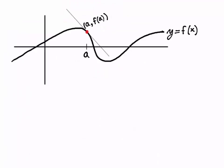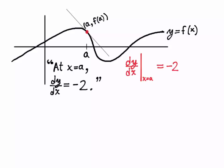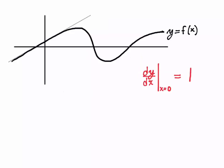Going back to the curve we were just looking at: we have differentiated it at x equals a and computed the slope of a tangent line — that slope looks to be about negative 2. We might describe that by saying, at x equals a, dy over dx is equal to negative 2. Or using evaluation notation: dy over dx evaluated at x equals a is negative 2. But if we differentiate somewhere else, like at x equals 0, we get a totally different result — dy over dx evaluated at x equals 0 equals 1.